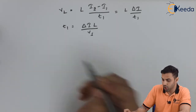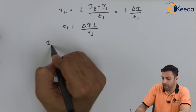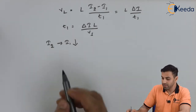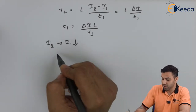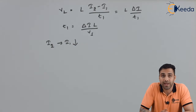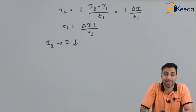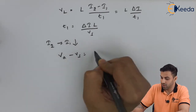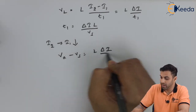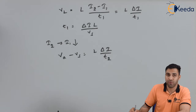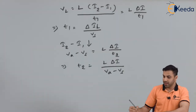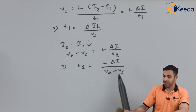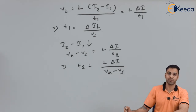During discharging, the current drops from I2 to I1. Applying Kirchhoff's voltage law in the discharging circuit, we get VA minus Vs equal to L times delta I divided by T2, where T2 is the off time. So the value of T2 equals L times delta I divided by (VA minus Vs).